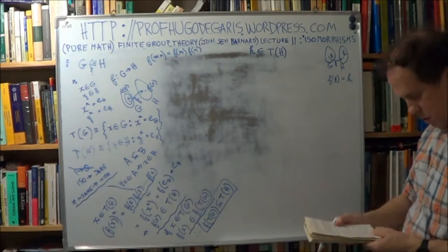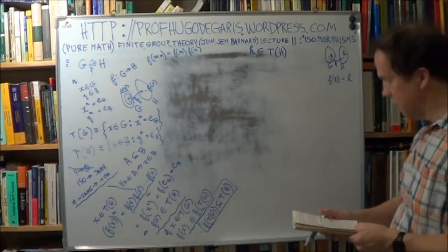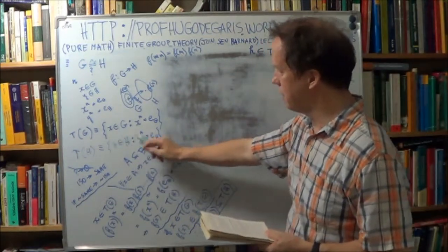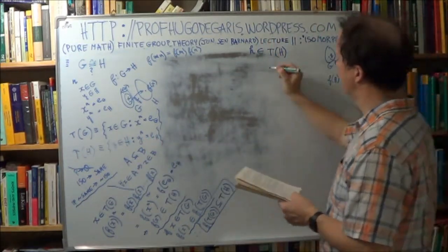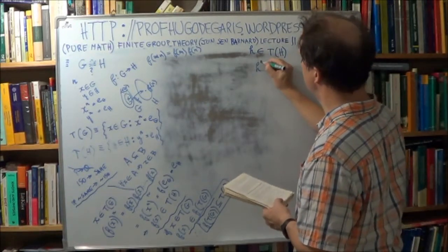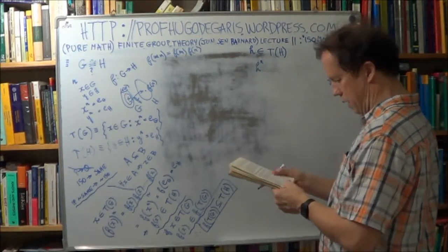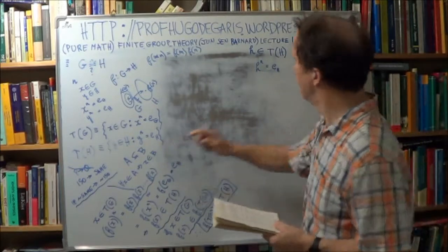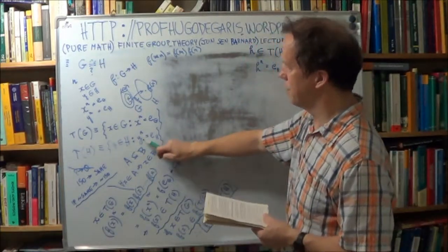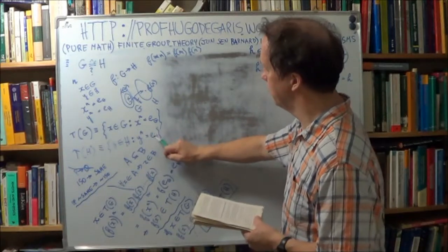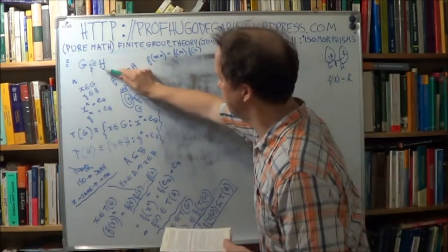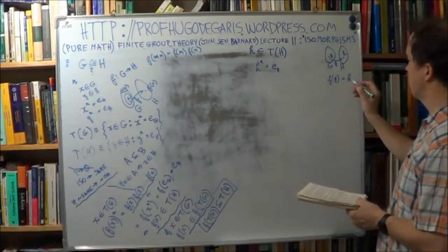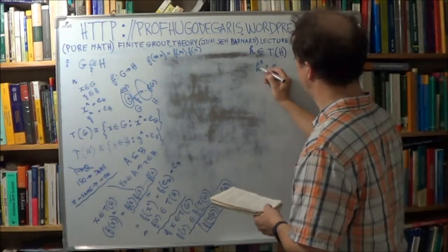For every element in H there is a corresponding element in big G that maps to it. So in other words, you can say F of g is h. The corresponding element in group G that maps to little h here is little g. Now, because this little h belongs to this set — that's the assumption — it follows that if you raise this to the power n, you will get e of H by definition. If H belongs to this set, it has to satisfy that property, so h to the power n is the unit of big H.